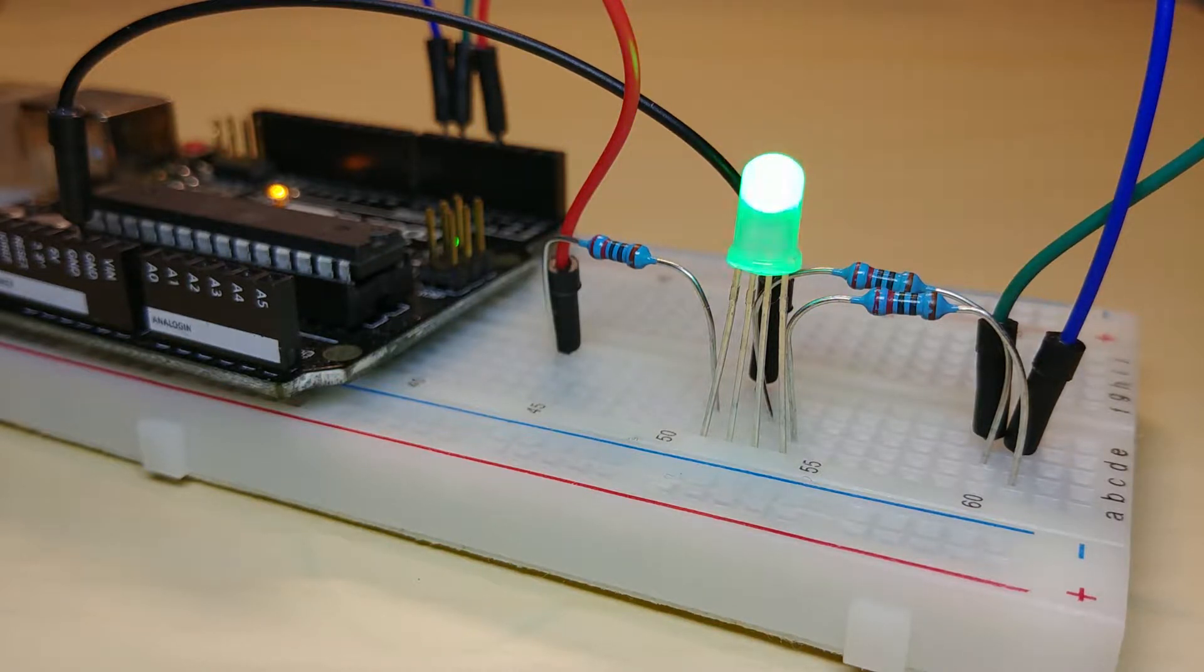Today we are going to adjust the brightness of an RGB LED with the help of two types of loops and the analog write function. Let's get started.